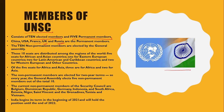The 10 non-permanent members are elected by the General Assembly, and these 10 seats are distributed among various regions of the world: 5 seats are reserved for African and Asian countries (3 for Africa, 2 for Asia), 1 for Eastern European countries, 2 for Latin American and Caribbean countries, and 2 for Western European and other countries. Non-permanent members are elected for a two-year term, and every year the General Assembly elects 5 of the total 10.